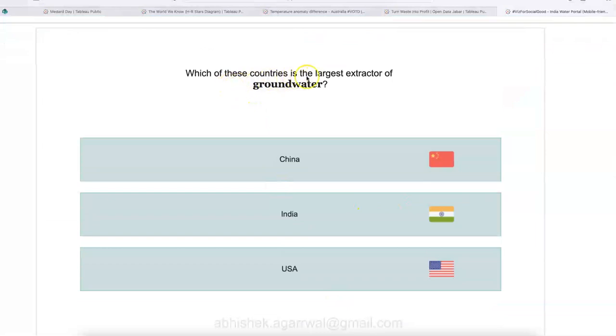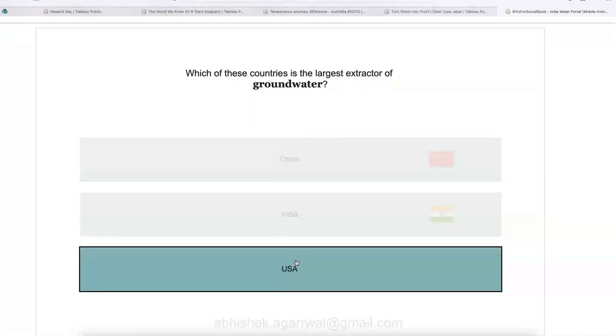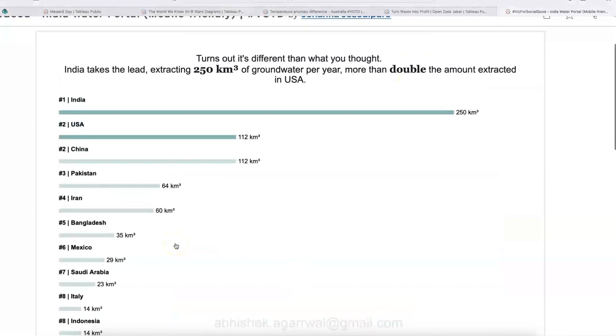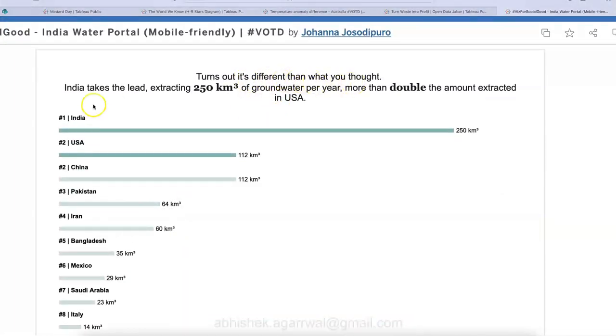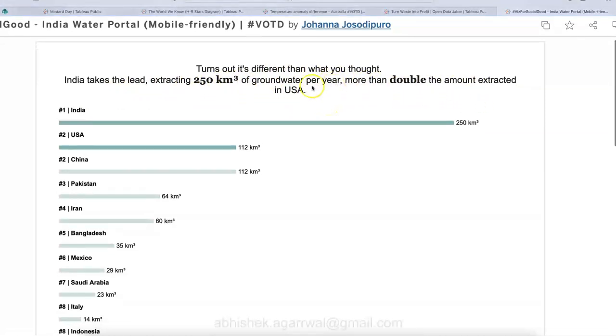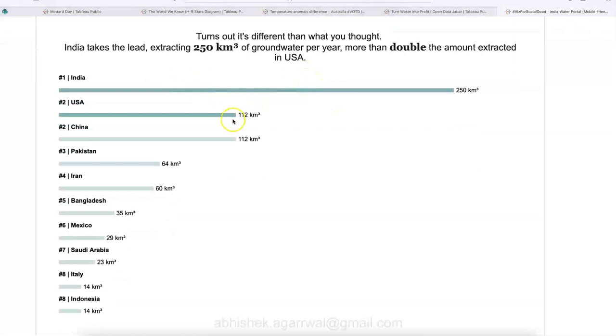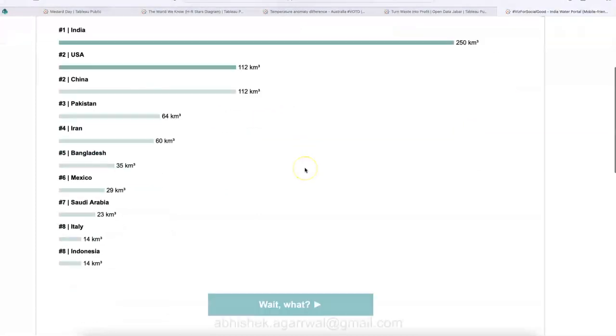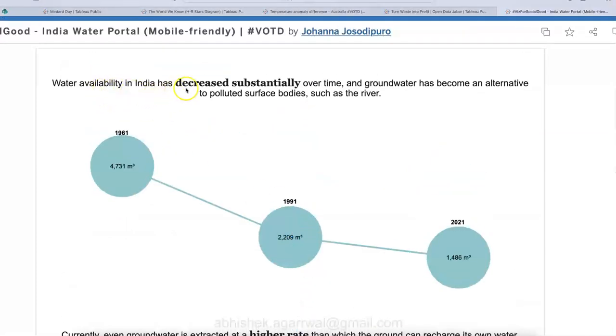Now the next question, which of these countries is the largest extractor of groundwater? Let me select USA, and see what is happening. So turns out it's different than what you thought. India takes a lead extracting 250 kilometer per cube of groundwater per year. More than double the amount extracted in USA. So very interesting observation. Where is the India? Where is USA? Where is China? Similar, but India is consuming more from the groundwater, almost double. Wait, what? So again, you can keep exploring. Water availability has decreased substantially over time and groundwater has become an alternative to polluted surface bodies.